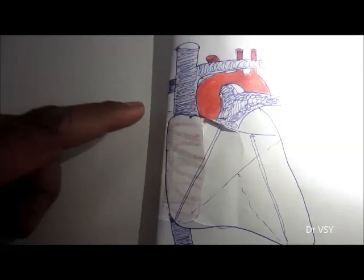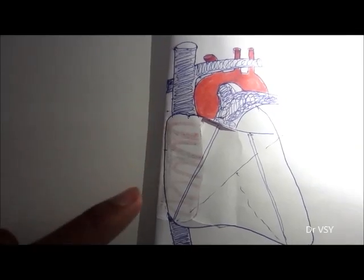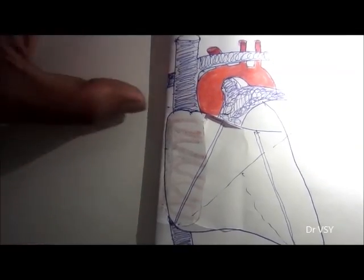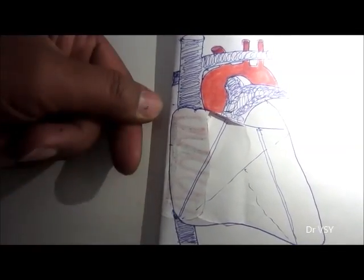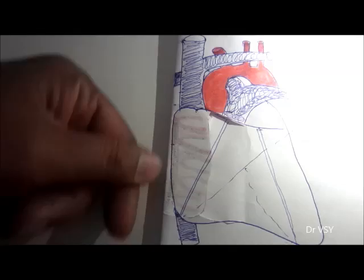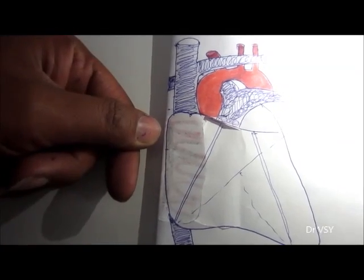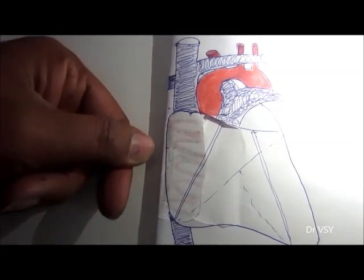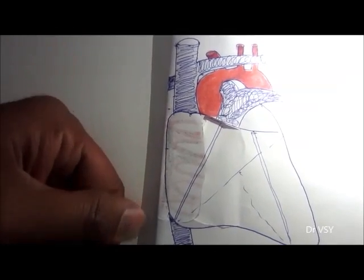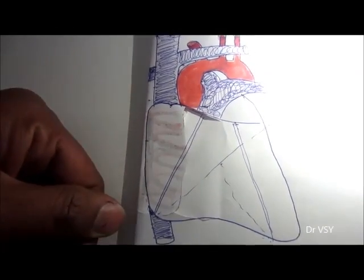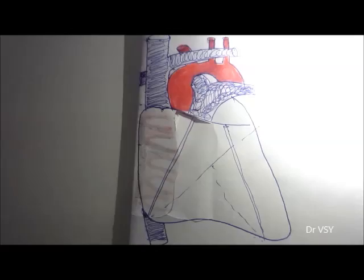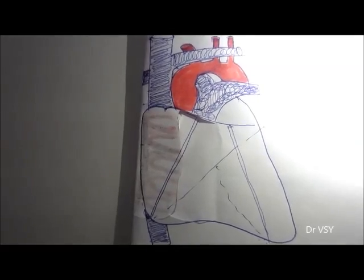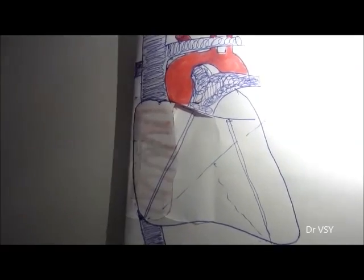On the external surface of the atrium there is a groove present. From the outside you can see this groove is known as the sulcus terminalis.